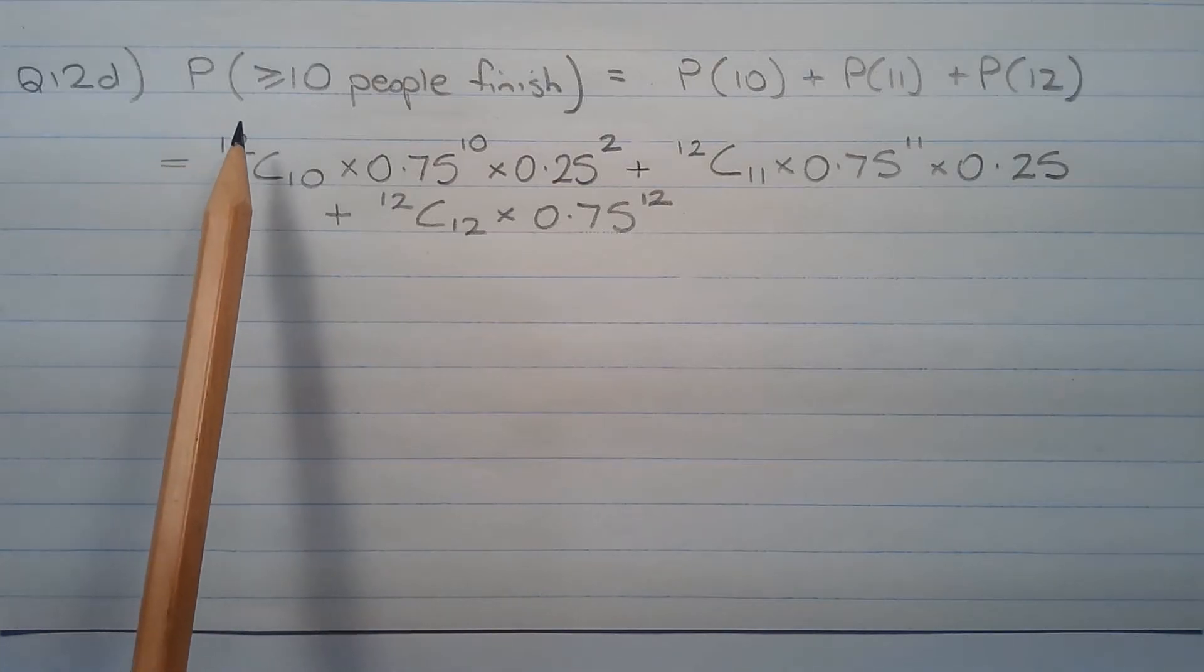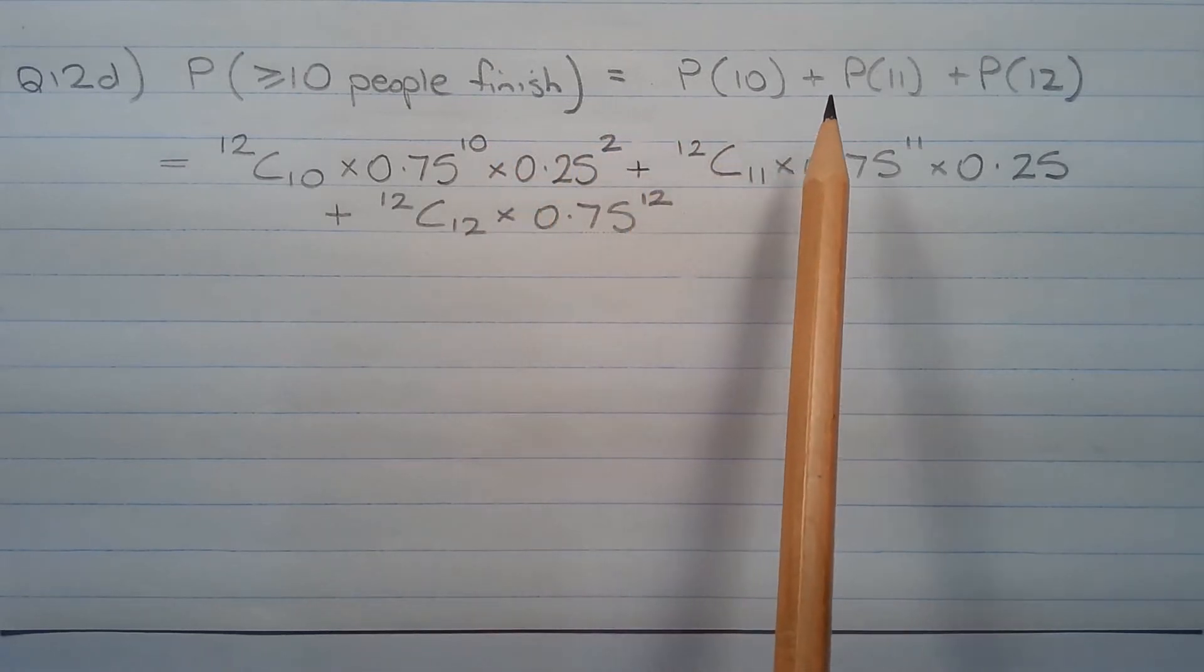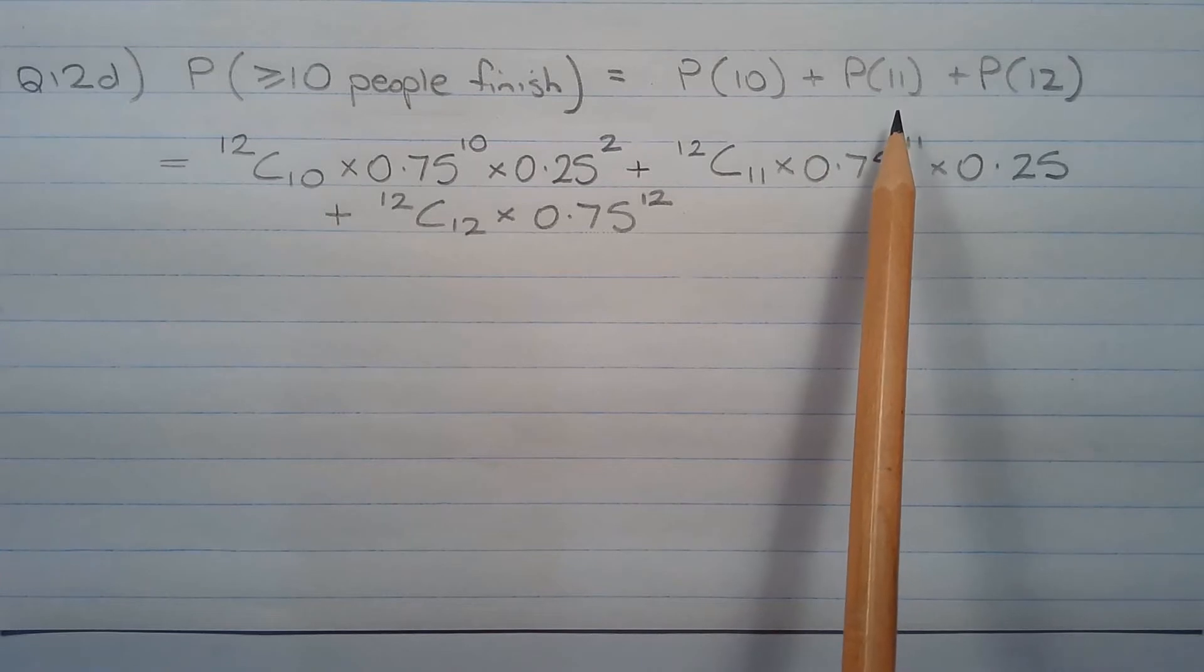The probability that at least 10 people finish the trek within 8 hours is equal to the probability of 10 people finishing plus the probability of 11 people finishing plus the probability of 12 people finishing.